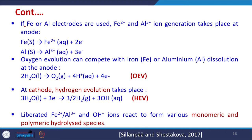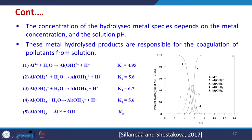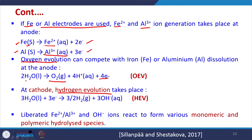If iron or aluminium electrodes are used, Fe2+ or Al3+ ions are generated via this mechanism. Iron in its solid form gets converted to Fe2+ with release of 2 electrons; aluminium gets converted to Al3+ with release of 3 electrons. Additionally, oxygen evolution and hydrogen evolution reactions take place whenever voltage is applied. These compete with iron and aluminium dissolution reactions at the anode: water is converted to O2, 4H+, and 4 electrons. At the cathode, the hydrogen evolution reaction also takes place.